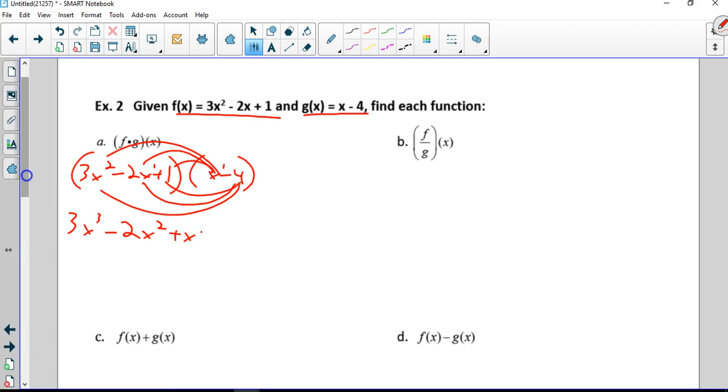Now the negative 4, minus 12x squared, plus 8x, negative 4 times negative 2 is positive 8, we're going to bring the x along, minus 4. Combine like terms: x squared, x, cubed and the constant are alone. So that's 3x cubed minus 14x squared plus 9x minus 4.